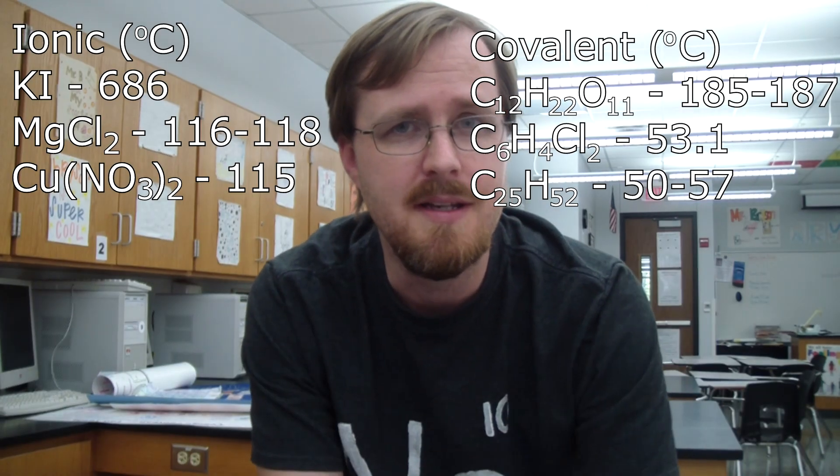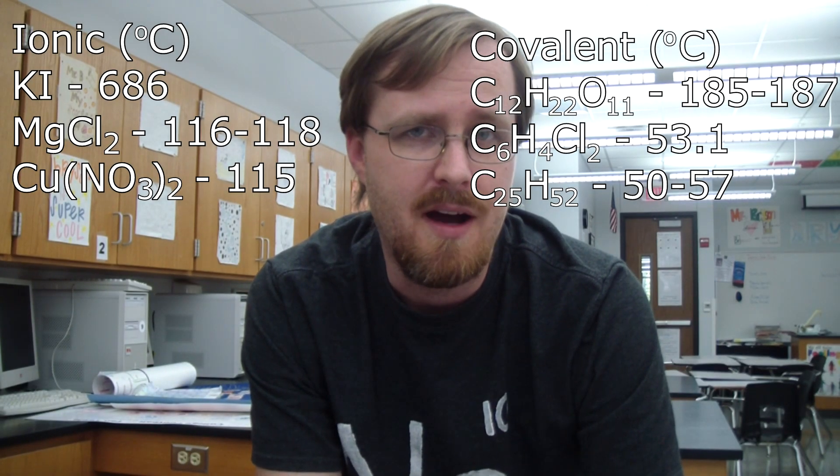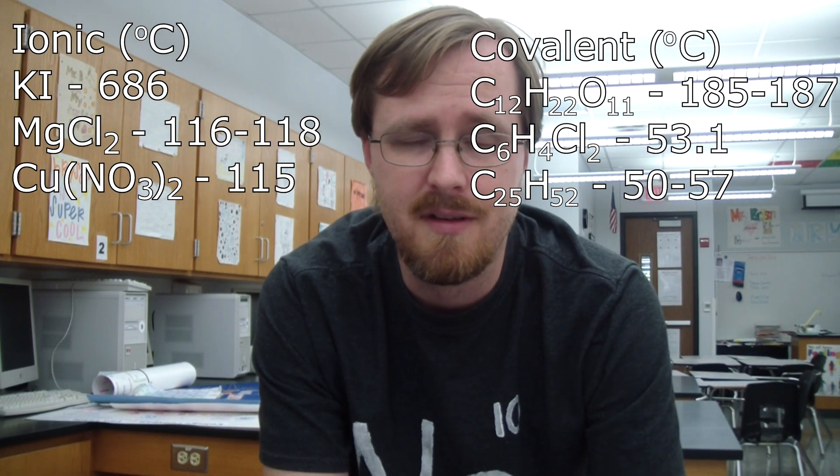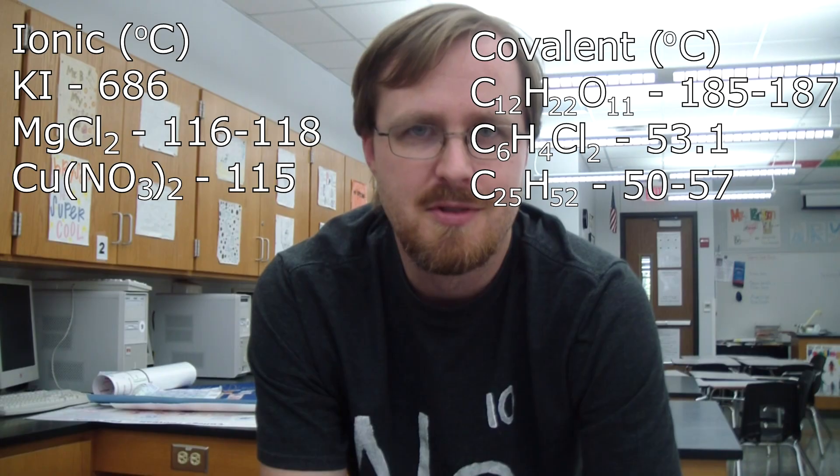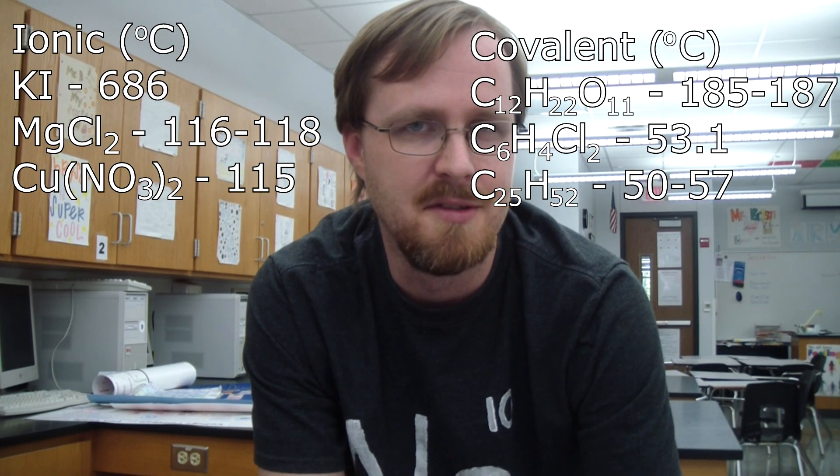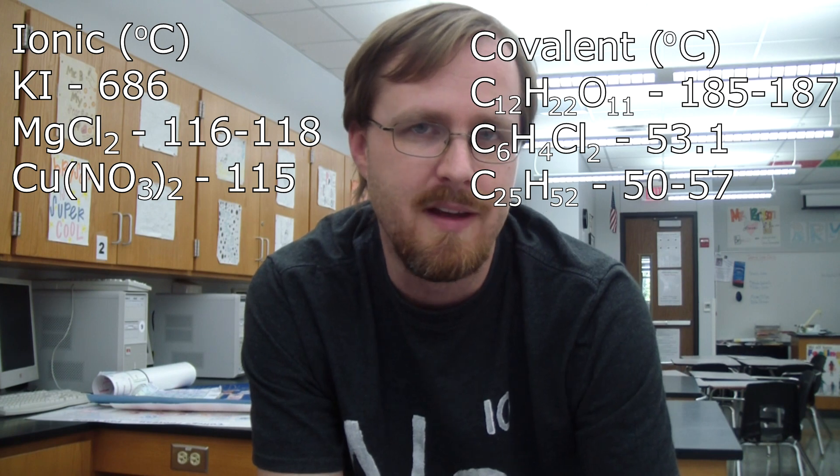So the next property we're going to look at is the melting point. And for that, I have grabbed our trusty safety data sheets here, which list all of those physical properties on there. Now, instead of just reading it off to you for all six of them, what I'll do is I'll just post them like so. And you can very easily see that the ionic compounds generally have a higher melting point than the covalent compounds. Now, again, there are some exceptions to the rule, but overall, ionics tend to have higher melting points than the covalent compounds do.